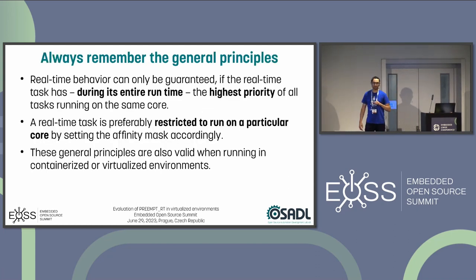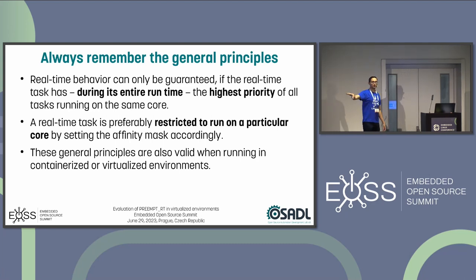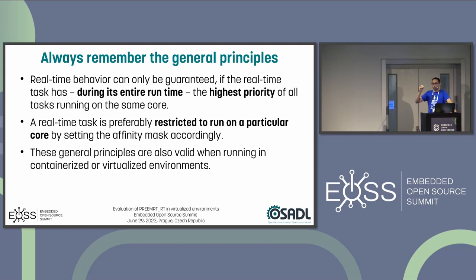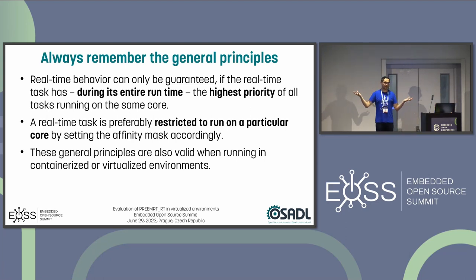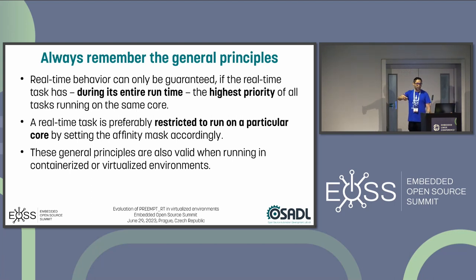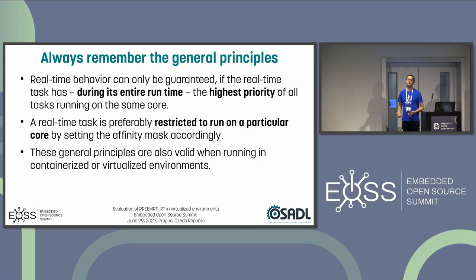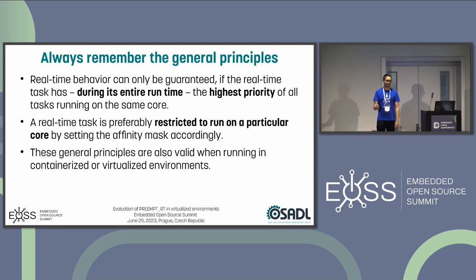Before digging deeper into the test setup, we need to remember key principles for setting up a real-time system. First, to guarantee real-time behavior, the real-time task needs the highest priority during its entire runtime — of all tasks running on the same core. Otherwise it might get interrupted and violate its timeline. If you want to optimize further, you can restrict the task to a particular core and even isolate that core from additional noise. These general principles also apply to real-time virtual environments.